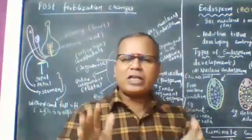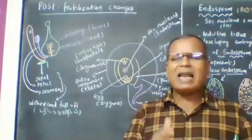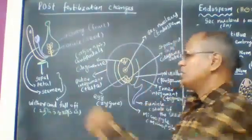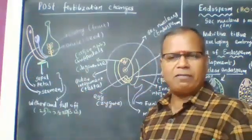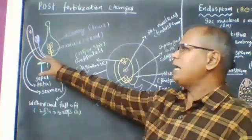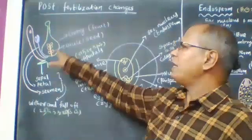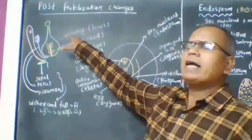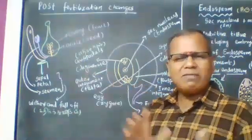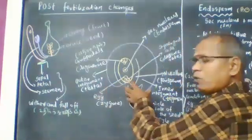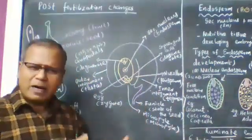After fertilization, the ovaries, flower parts such as petals, fall off. The ovary wall is converted into fruit wall or pericarp. The ovules are converted into seeds. The funicle — the stalk of the ovule — will become the stalk of the seed.